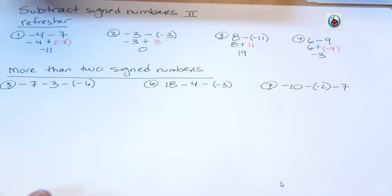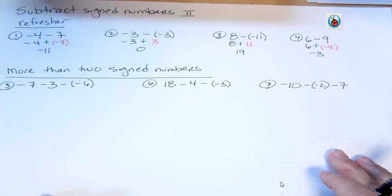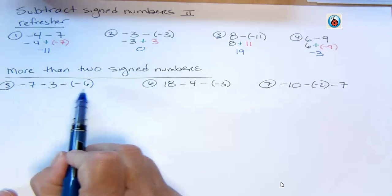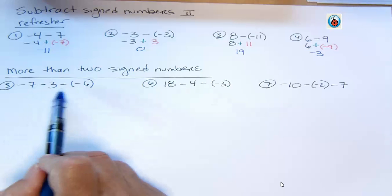Alright, what happens when you have more than two signed numbers? That's where this one goes a little further than the last one. So we have this string of numbers, and we have subtractions in there, and we don't want that.